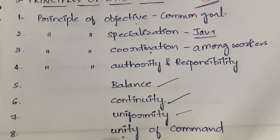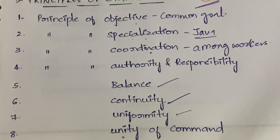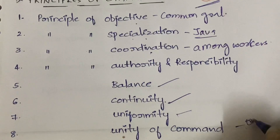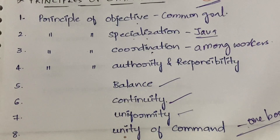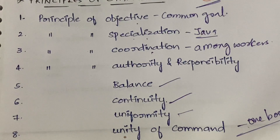Next is unity of command, which we've seen in other theories as well — the terminologies differ slightly. Unity of command means you should follow instructions from only one boss and be answerable to that one boss only. You cannot have two bosses at the same time, because then you'd have to do work given by both, which creates confusion and you cannot justify either.